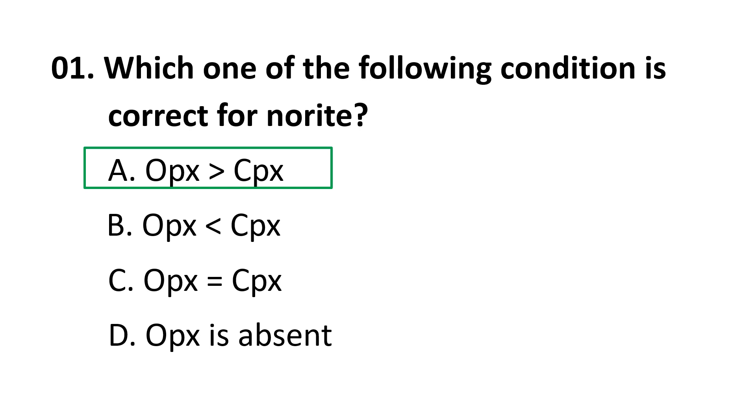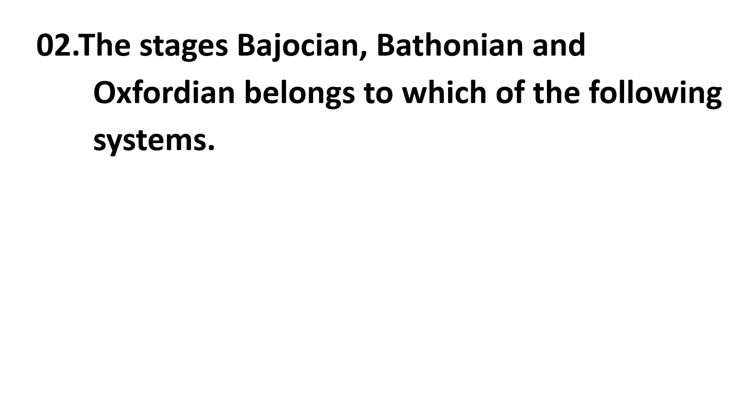Second question: the stages Bajocian, Bathonian and Oxfordian belongs to which of the following systems? Choices are A Triassic, B Jurassic, C Cretaceous, D Permian. The correct answer is B Jurassic.